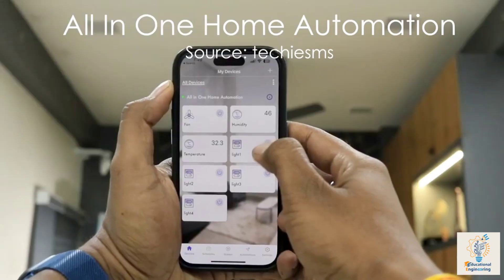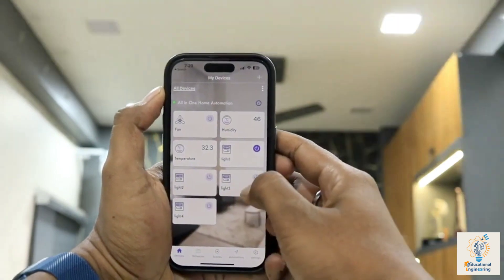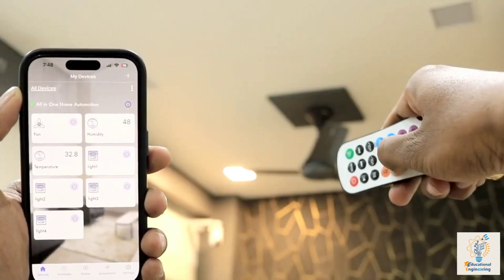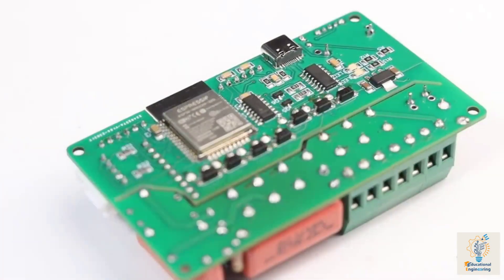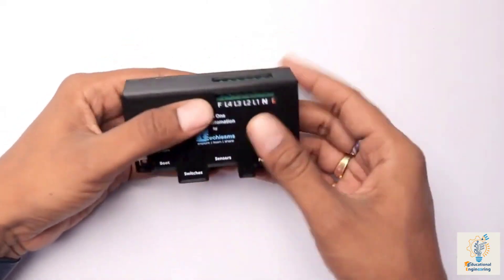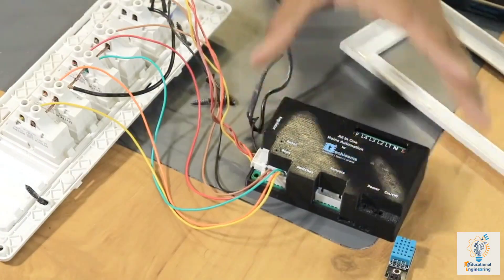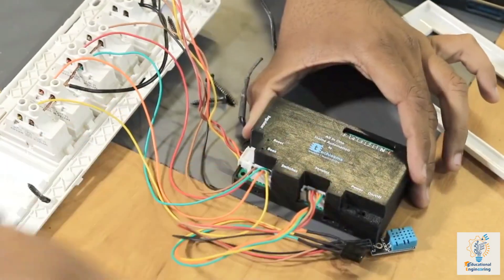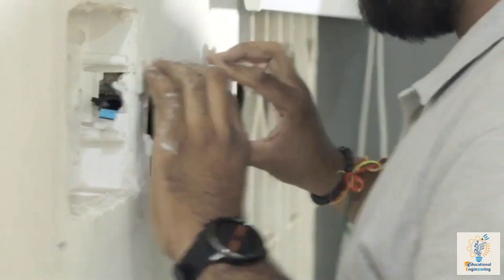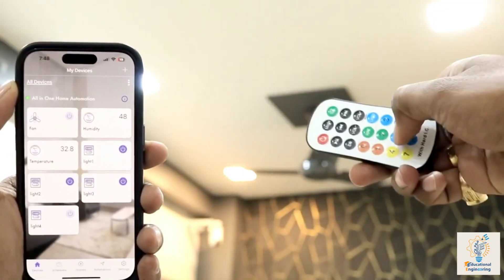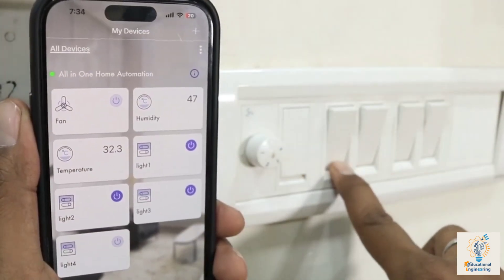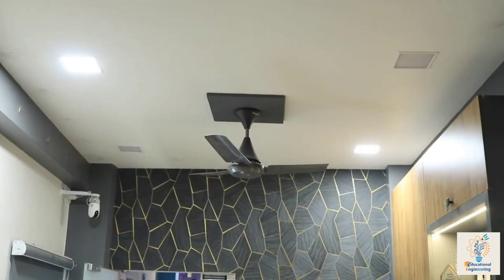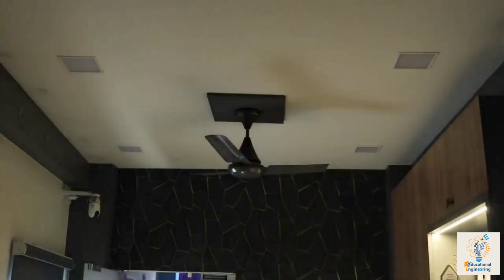This all-in-one home automation system allows you to control your home appliances using a smartphone as well as an IR remote. To make it compact, it mainly uses SMD components soldered on a PCB. This makes it easier to place it behind your switchboard, without requiring extra space. Irrespective of the controlling method, the status of the appliances can be monitored in real time on the app. It also remembers the last state of the lights, and turns on only those appliances that were running before.